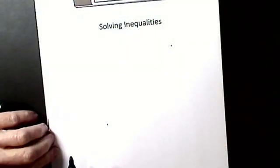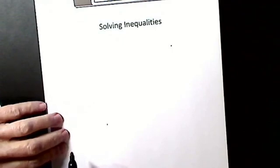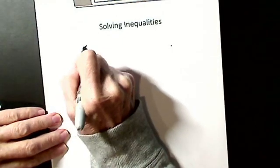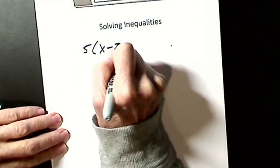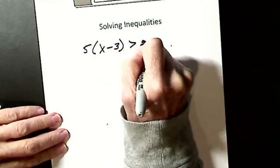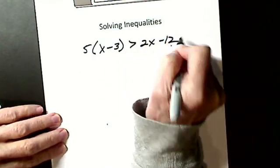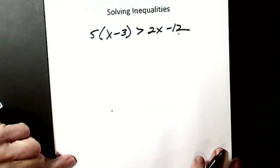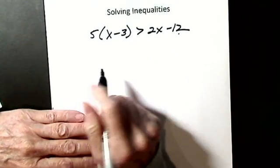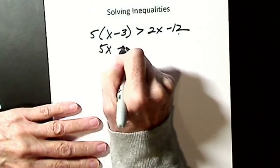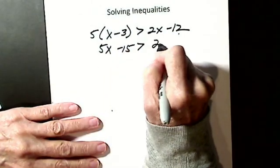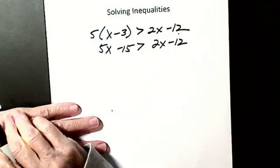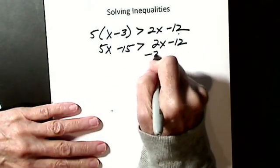We'll do one more inequality, but we'll do a little bigger one. Let's say I have one like this: 5 times (x minus 3) greater than 2x minus 12. I solve it just like an equation. I'm only going to have to worry about my last step. So distributive property, 5x minus 15. I have 2x minus 12.